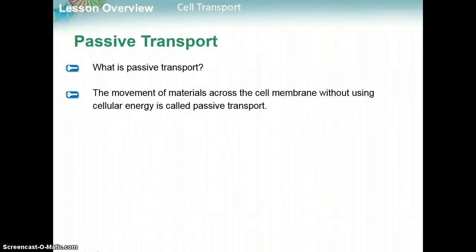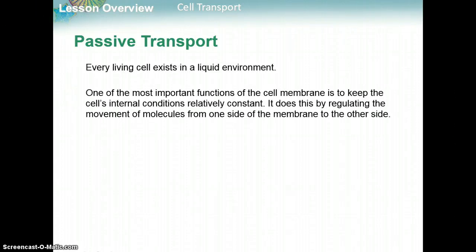Passive transport is the movement of materials across the cell membrane without using any sort of energy — it just happens naturally. Cells all live in some sort of liquid environment, and one of the most important functions of a cell membrane is to regulate what's going in and out of the cell so it can keep internal conditions relatively constant, which is homeostasis — keeping things in balance.